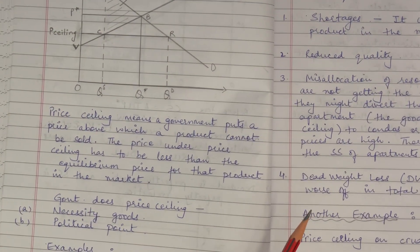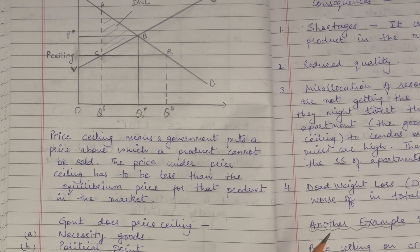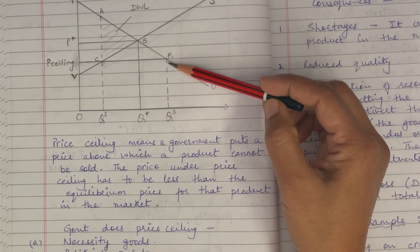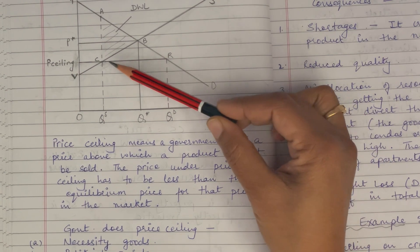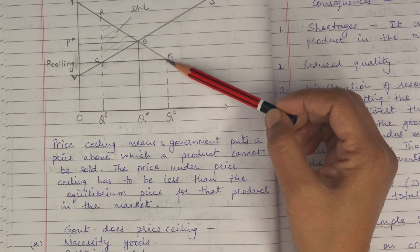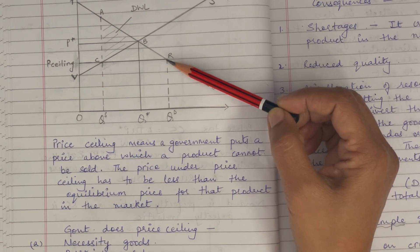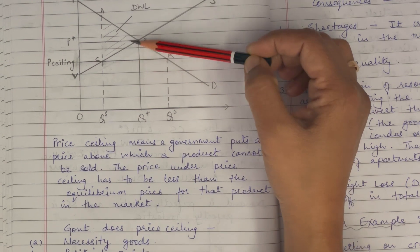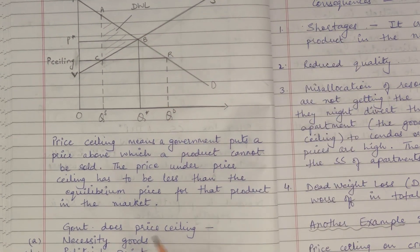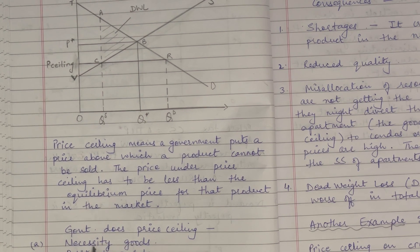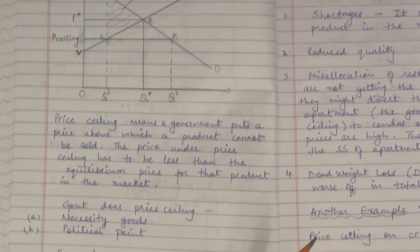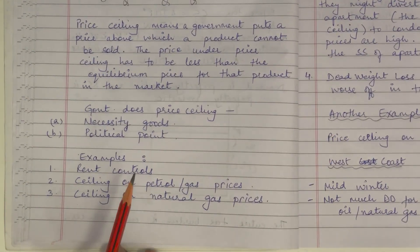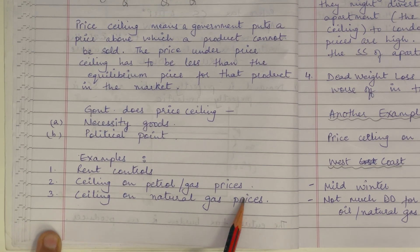The government puts a price ceiling on necessity goods, or it could be a political decision. The government thinks every group of society should be able to have that good, so the price should be lower since if left to the market the price can go very high. A few examples of price ceiling are rent controls, ceilings on petrol or gas prices, and ceilings on natural gas prices.